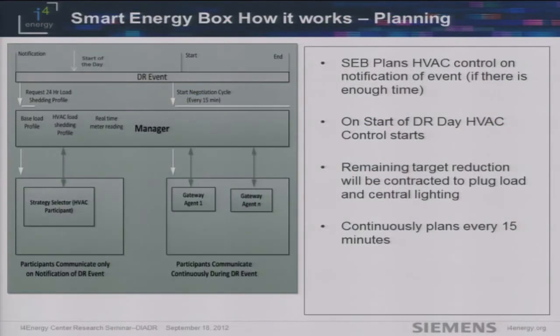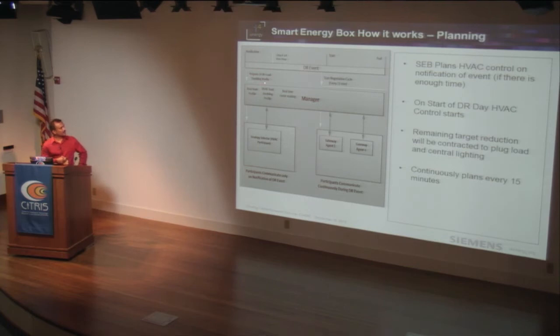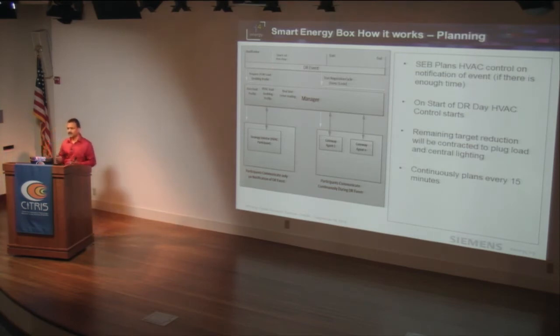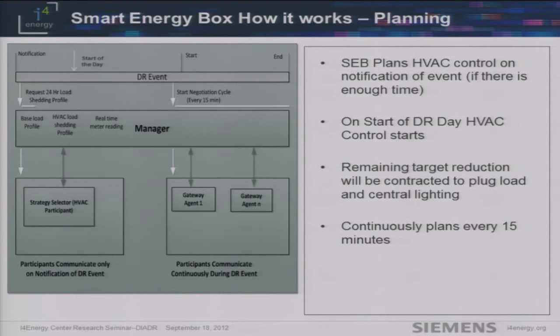This is how the Smart Energy Box works. Whenever a day-ahead event is notified, the manager inside the Smart Energy Box evaluates the available profiles using the strategy selector and brings in the right strategy for the next day. During the start of the day, it begins applying the strategy to the building. The strategy is a set of set points — in this building we control almost 450 control set points including thermostats, VAV flow, supply temperature, heating and cooling mode set points, as well as roughly 80 central lighting set points.